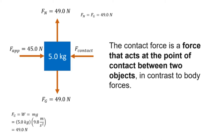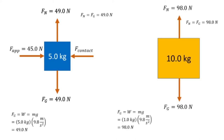To analyze the 10-kilogram box, we draw the normal force and force of gravity and calculate their values. For the contact force, we draw it directed rightward, since that is the direction our smaller object makes contact with our bigger object. We have now completed the free body diagrams for our two boxes and can proceed to solving the problem.